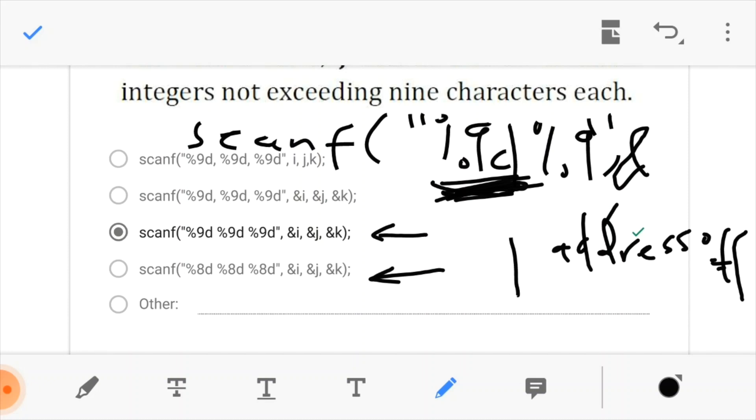So, say I take the value for the first character, the first integer and I want to put it somewhere. The reason why we are doing this is that when I take my character, I have to put it inside the variable. Obviously, it has to go somewhere.